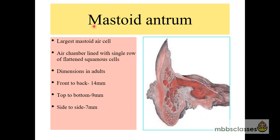In the mastoid air cells, the biggest and most constant air cell is known as the mastoid antrum. This mastoid antrum is the largest air cell. It is an air chamber which is lined by mucosa and contains air. There are bony partitions which contain air within them and they are lined by mucosa. The nature of the mucosa lining the mastoid air cell system is a single row of flattened squamous epithelium.